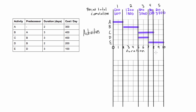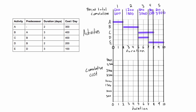Now we'll draw the project S curve for cumulative costs. Make sure the axes match the Gantt chart above, with this axis tracking cost in dollars. We already know the cumulative costs for each period — the sum at the end of the last period is the whole project cost. We start at zero dollars and plot the cumulative cost at the end of each period.